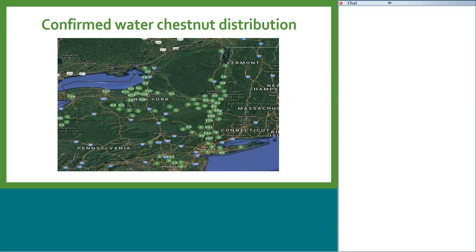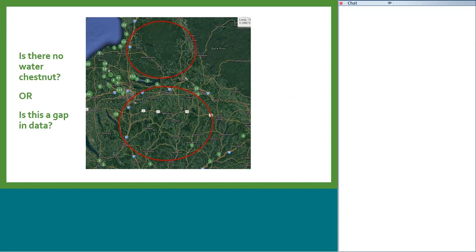Here's a map of confirmed water chestnut distribution. It's pretty widespread throughout New York State and well documented, but there are many places where we don't know if it's present or absent. For example, Oneida Lake has confirmed water chestnut, but we don't know where it's coming from — north of it, we have no reports. We don't know if those tributaries are the source. You can report and do a simple presence-absence survey, telling us whether it's there or not, to fill that database with that information.